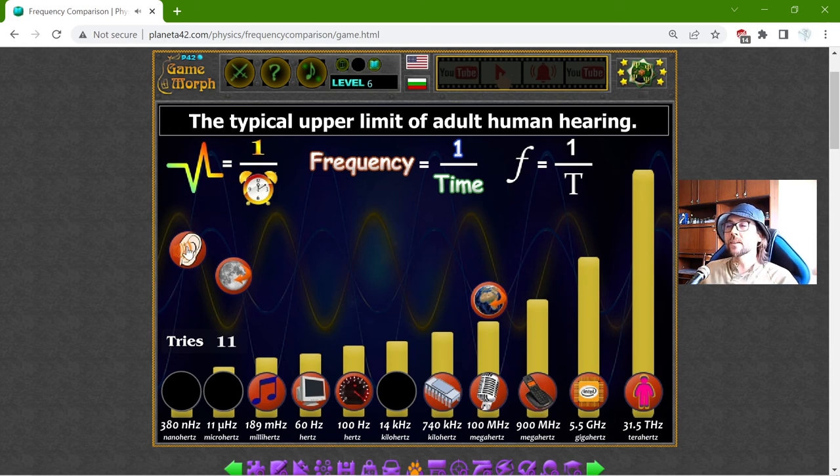And the typical upper limit of adult human hearing is... what is that? 14 kHz.